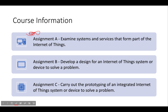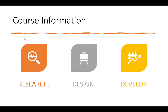You're going to have to answer loads of questions to understand everything about what makes up the Internet of Things. Assignment B is to develop a design for an Internet of Things system or device to solve a problem — and we are given the problem to solve. Assignment C is to carry out the prototyping of an integrated IoT system or device. So: research, design, and develop — nothing new there.